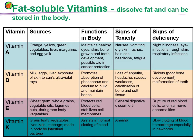Vitamin E can be obtained from whole grains, vegetables, and legumes. Its function is to protect red blood cells and to stabilize cell membranes, which means they will function properly.